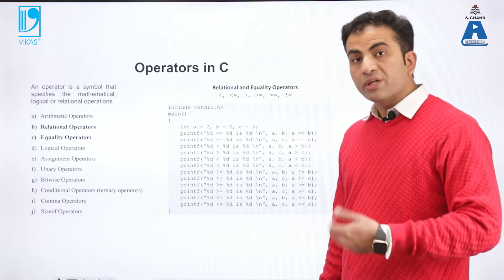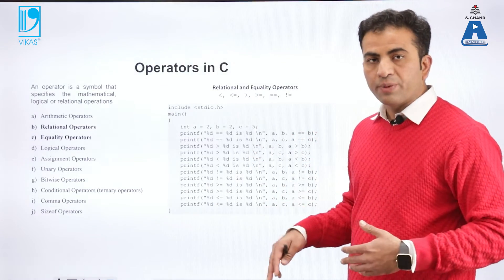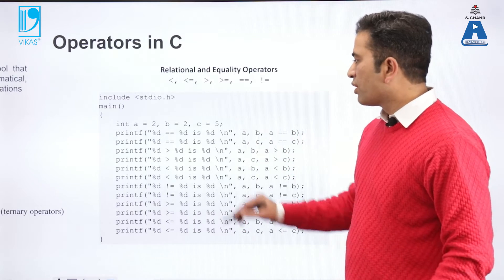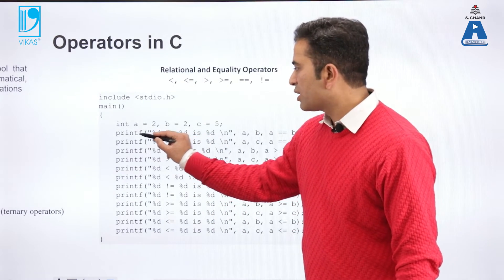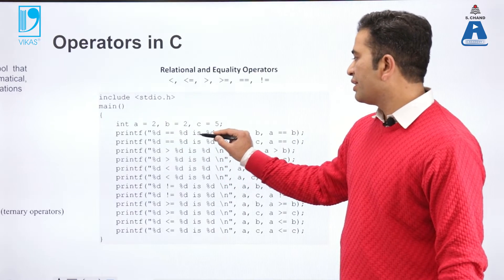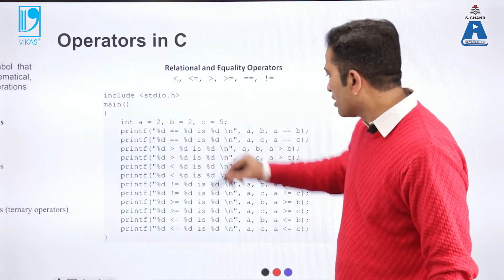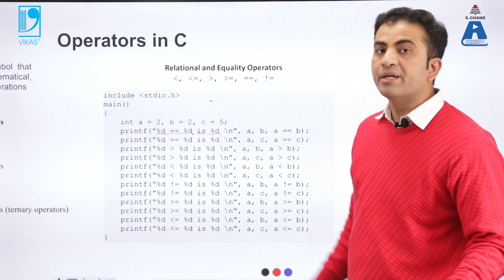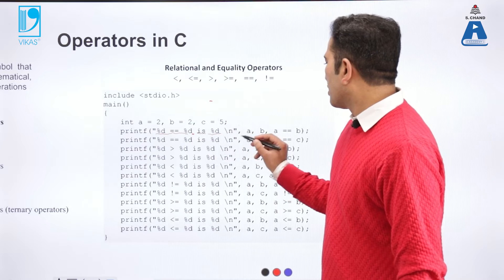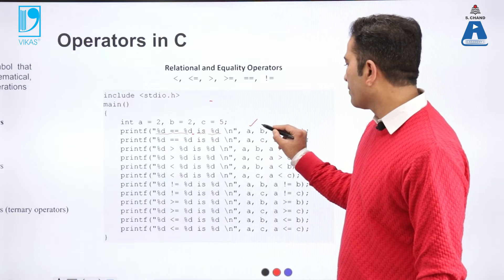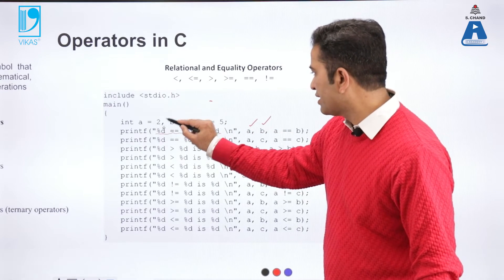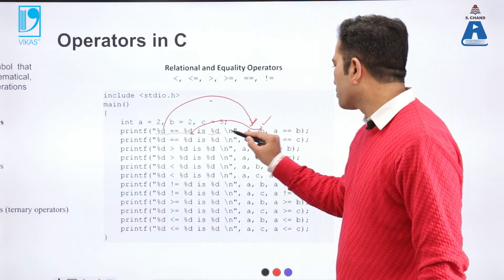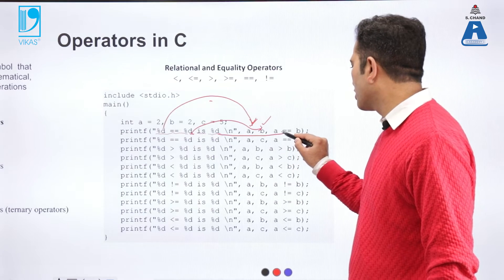Here is a program to understand more clearly the difference between relational and equality operators. We have initialized variable a equal to 2, b equal to 2, and c equal to 5. The printf statement is written as: %d equal to %d is %d. This whole statement will be printed as-is, but instead of %d it will print the values. The first %d belongs to a, the second %d belongs to b, and the third %d belongs to the expression a equal to equal to b.